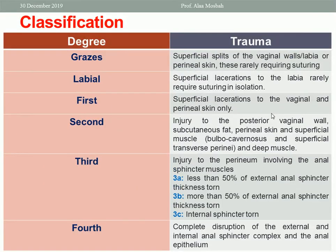Regarding classification, there are different degrees of trauma: grazes, labial trauma, first perineal tear, second, third, and fourth perineal tears. Grazes are just superficial abrasions of the vaginal wall, labia, or perineal skin — usually don't need any suture. Labial tear may be very superficial also, or sometimes it may need approximation by suture. First degree perineal tear includes the vagina and perineal skin.